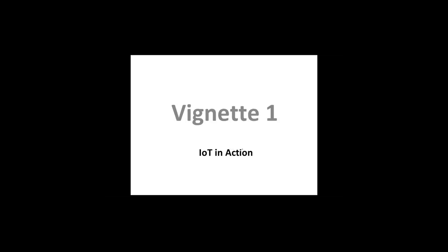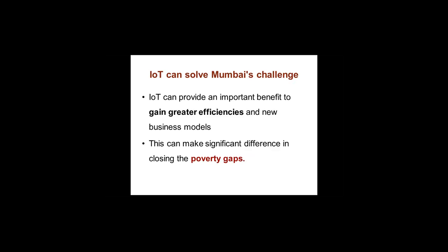People ask what is this IoT — let me explain through a very practical example. One of IoT's possible contributions is to improve life in a city. For example, a city like Bombay has one big challenge: to gain greater efficiency for its water and electricity supplies. This can make a great difference in reducing the poverty gap. Bombay is a city with millionaires and also people who are penniless — IoT can help these people.